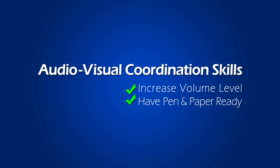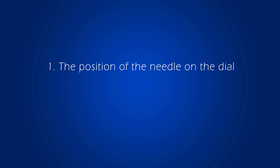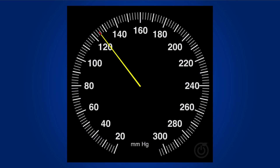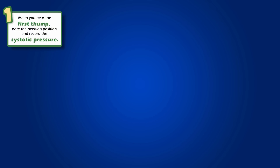There are two main areas that you need to focus on when determining a blood pressure reading. When you arrive at the point of the procedure where you slowly deflate the cuff to hear the sounds, you will notice the needle move in a counterclockwise direction. It is at this point that you need to listen very closely for the thumping sounds. Upon hearing the first thump, note the needle's position on the dial and record the number — that's the systolic pressure.